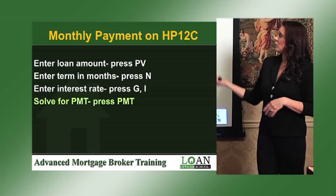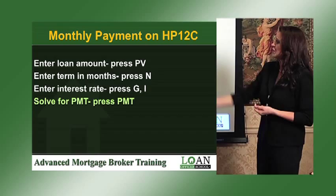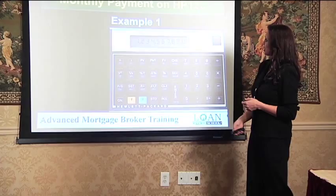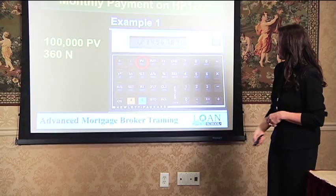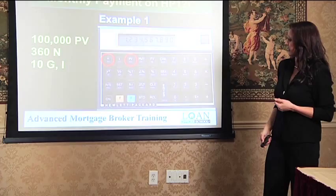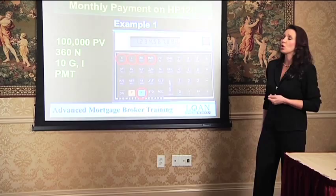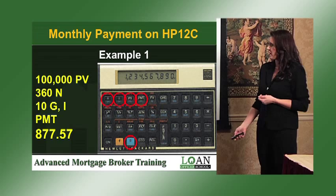In order to solve for a monthly payment, you know the borrower's loan amount, you know what their term is going to be, you know what their interest rate is, and you want to know what their monthly payment is going to be. So in this example, you're going to enter 100,000 and hit your present value key. Then enter 360 and hit your N key. Then hit 10, G, then I for a 10% interest rate. Now hit your payment key — it's going to be five function key steps — and the answer is 877.57.